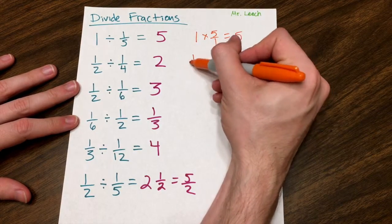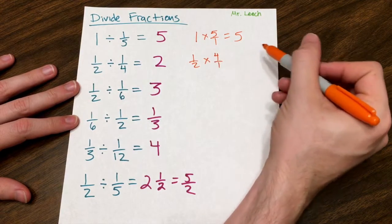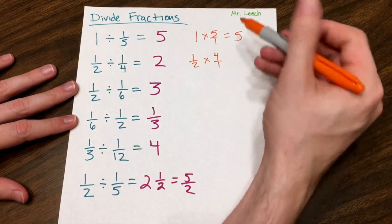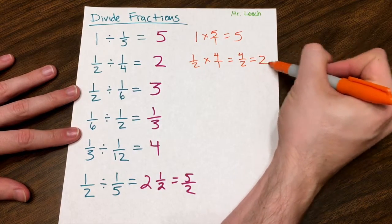This is the exact same thing as saying one-half times the reciprocal of one-fourth, which is four over one. So as we saw in the last video, you just multiply top times top, bottom times bottom. So this is four halves, which reduces to just two.